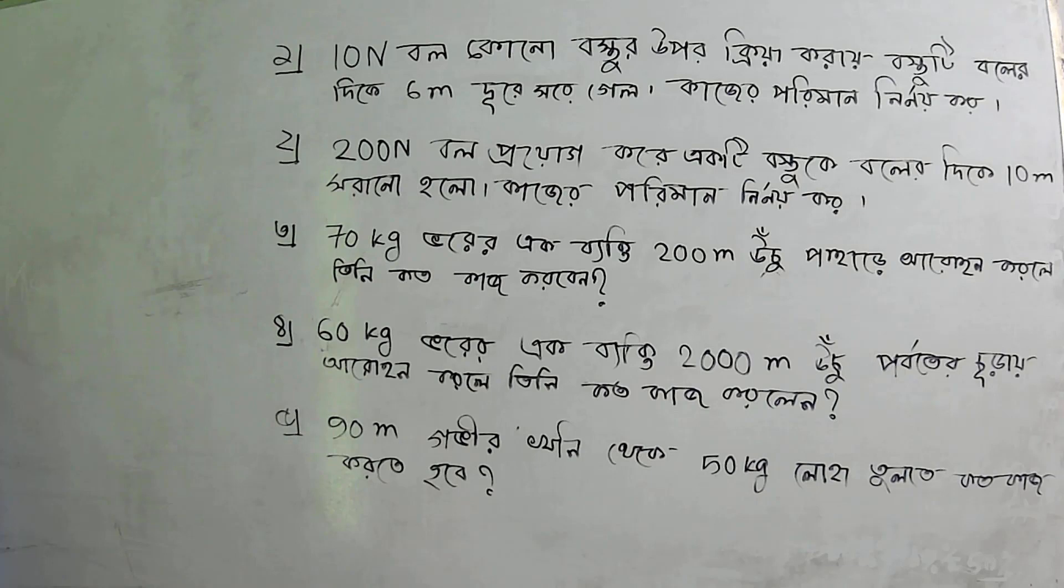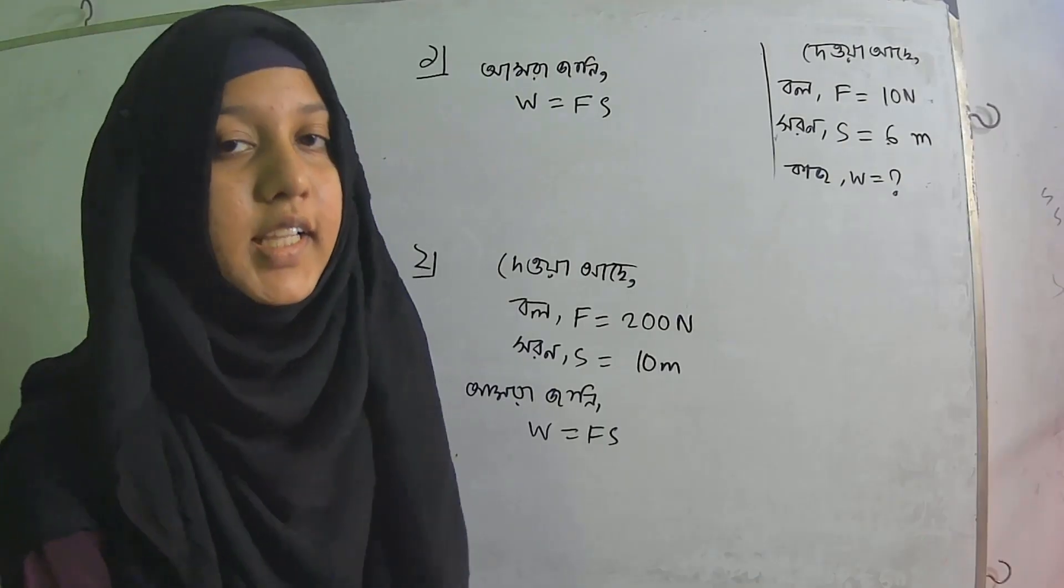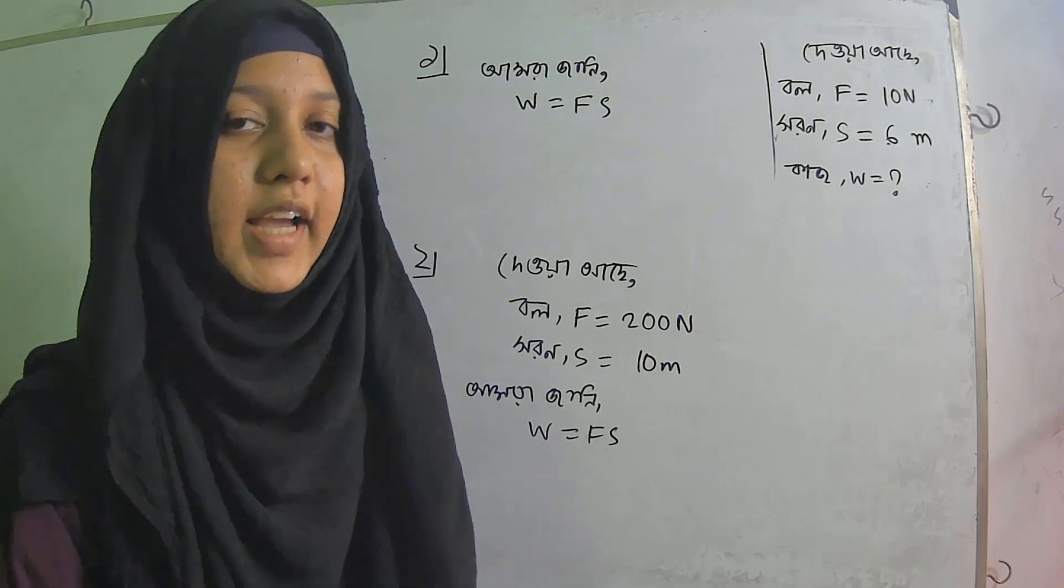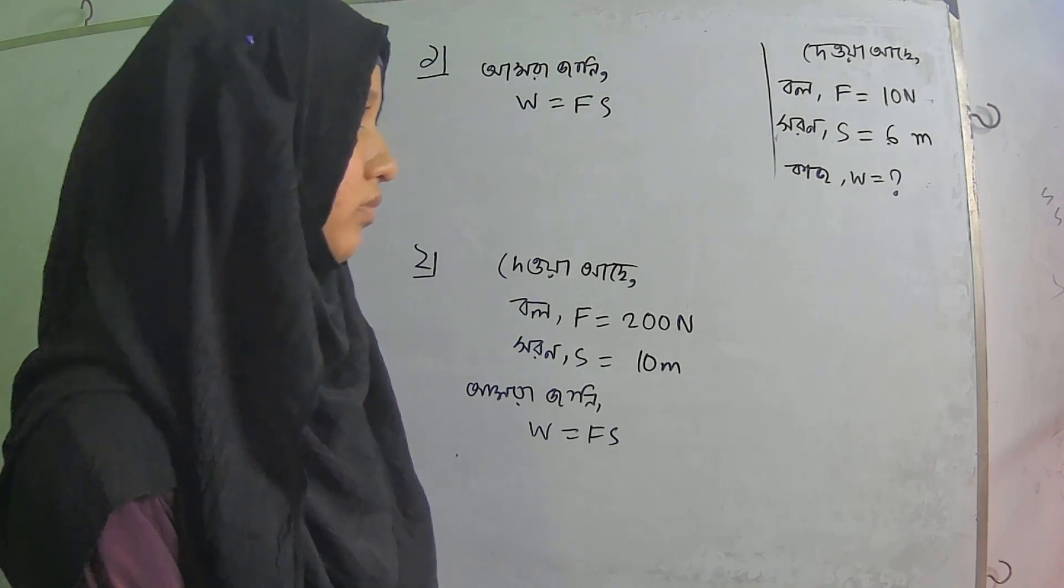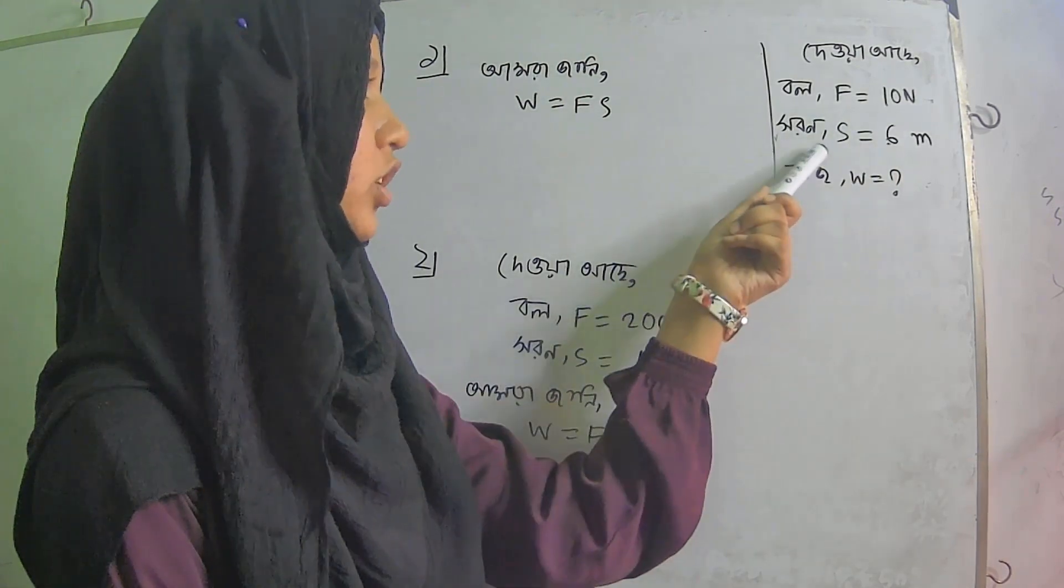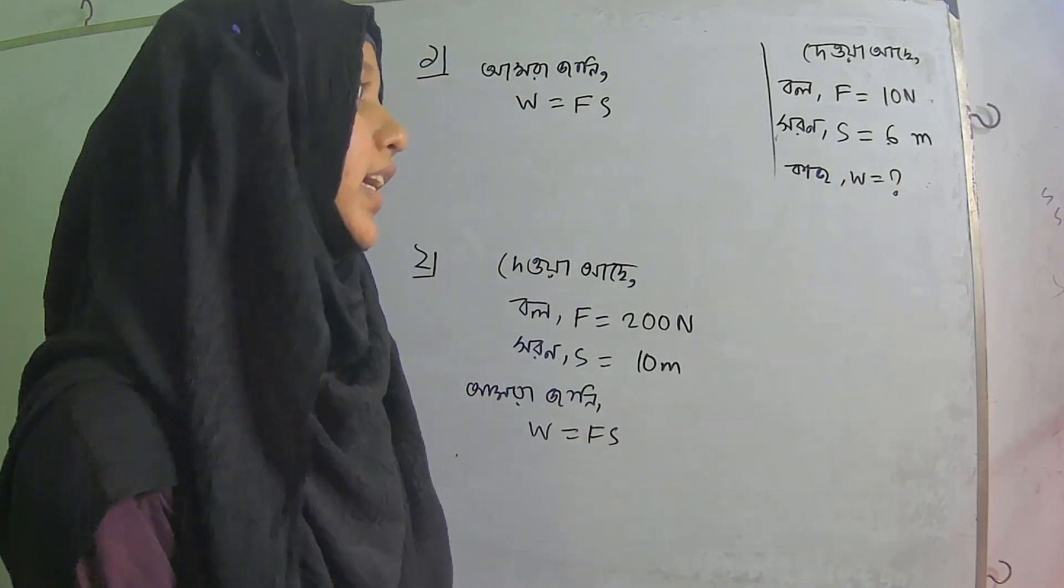10 N ball, which is 6 cm to 6 cm. This is a 10 N ball. W equals Fs, where the force is 10 N and the displacement is 6 cm.